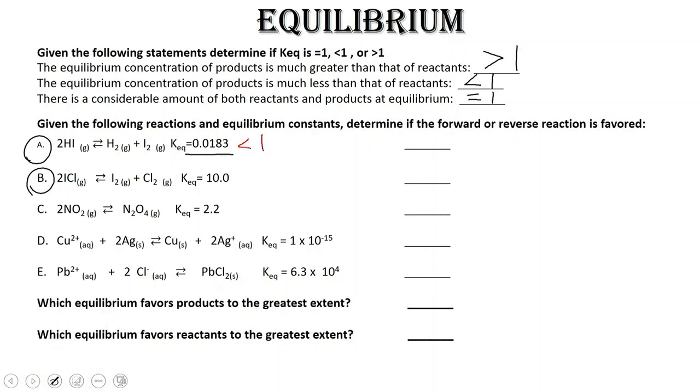so that means our reverse reaction is favored. And what does that mean? That means there's more reactant, so the concentration of reactants is greater than the concentration of products.